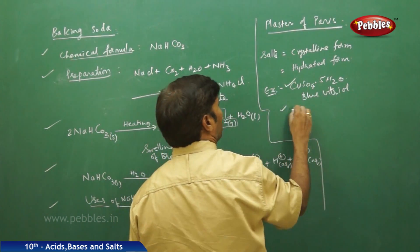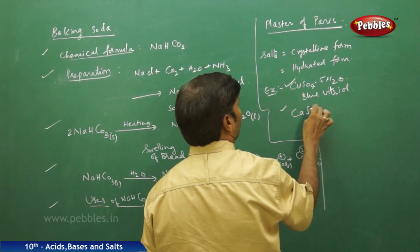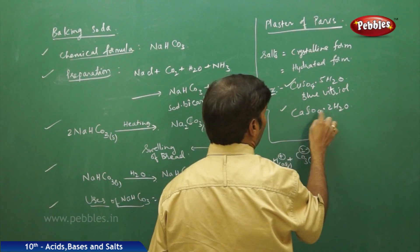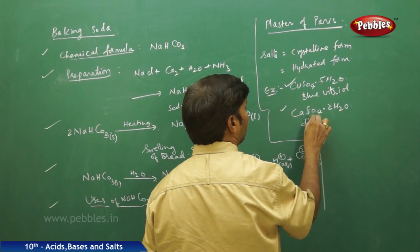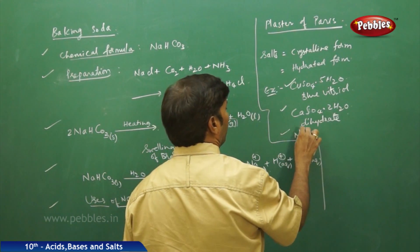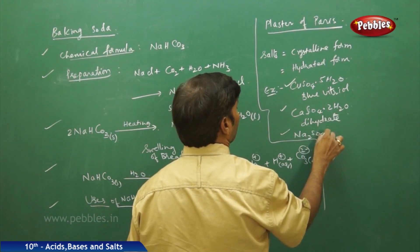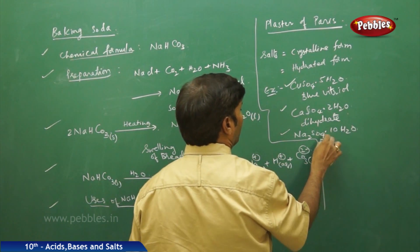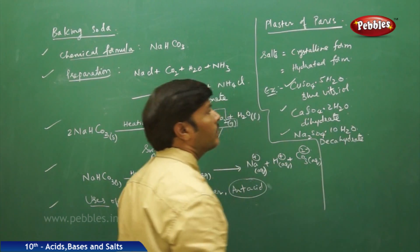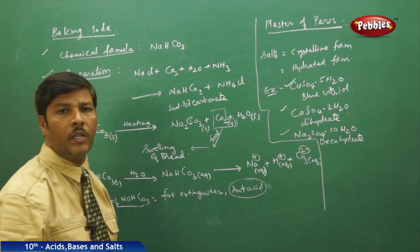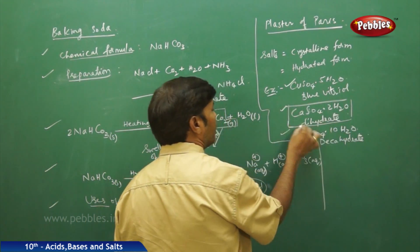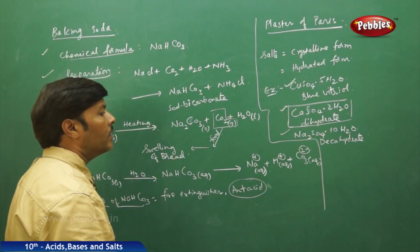Then calcium sulphate dihydrate (CaSO₄·2H₂O), and sodium sulphate decahydrate (Na₂SO₄·10H₂O). For plaster of Paris, we particularly need calcium sulphate dihydrate as the starting salt.